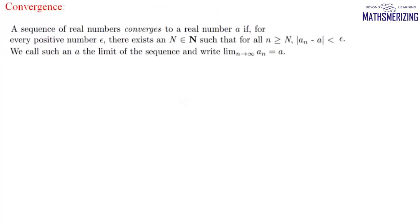Once we have defined a sequence, the next thing we study is convergence. A sequence of real numbers converges to a real number a if for every positive number epsilon, there exists an N belonging to natural numbers such that for all n ≥ N, |aₙ − a| < epsilon.